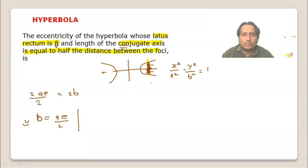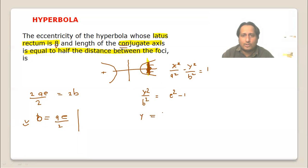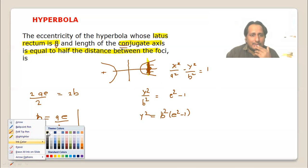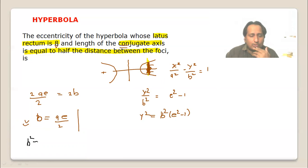To find the latus rectum length, substitute x = a in the hyperbola equation. Then y²/b² = e² - 1. So y² = b²(e² - 1). Also, the standard relation is b² = a²(e² - 1). Using this, y² = b⁴/a², giving y = ±b²/a.